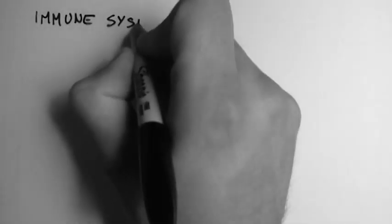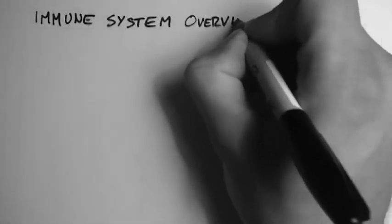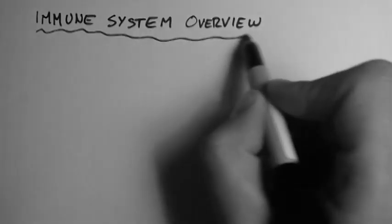In this video I'm going to give a quick overview of the immune system. The immune system is a system within the body that protects us from potential pathogens or bugs.